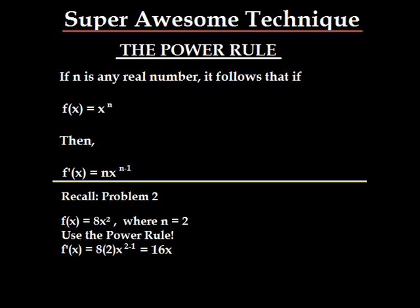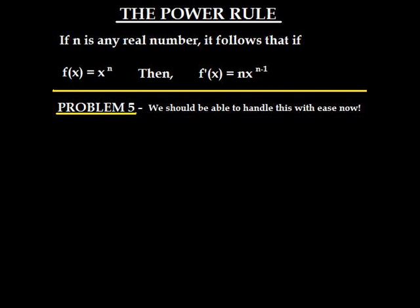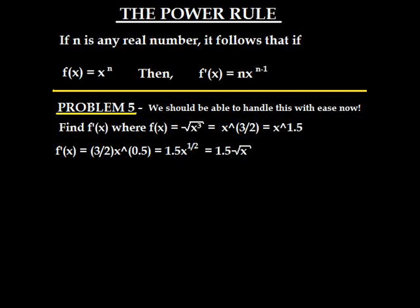All right, so now that we know the power rule, we should be able to take on problem 5 without much of a problem. f(x) is equal to the square root of x³, which can be rewritten as x to the power of 3/2, which is also equal to x to the power of 1.5. So we know that n is 1.5, we bring down 1.5, we multiply it by x, that's to the power of 1.5 minus 1, which is a half, so we obtain 1.5 times x to the power of a half. And the power of a half is also a square root, and that's rewritten as 1.5√x.